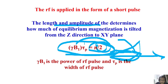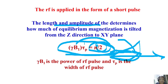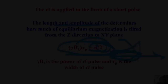Now you have the conceptual idea of the rotating frame. In the next class we will continue with 90-degree and 180-degree pulses, how the magnetization undergoes flipping, and further details.